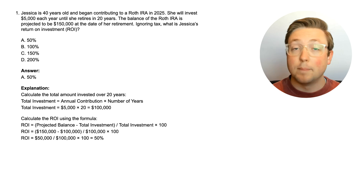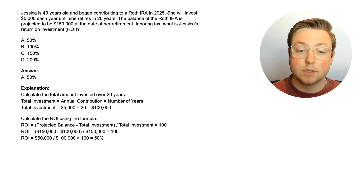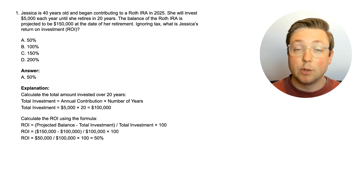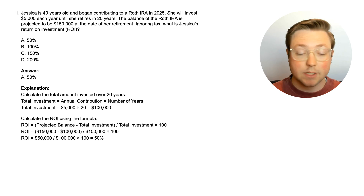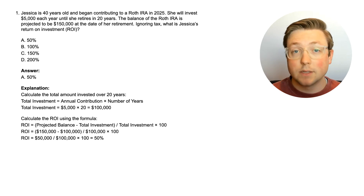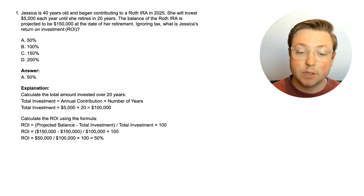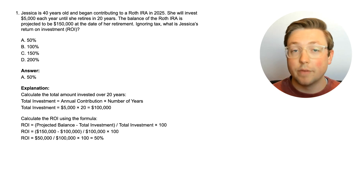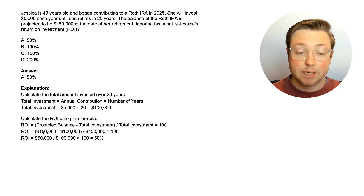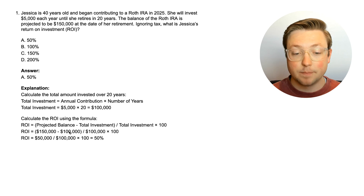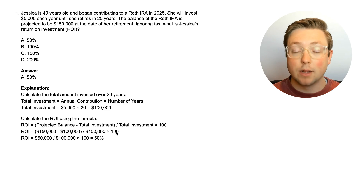First, you have to calculate the total amount that was invested — over the 20 years, that's $5,000 times 20 equals $100,000. Then you take the current balance, or in this case the projected balance, subtract the total investment, divide that number by the total investment again, and multiply all of it by 100, giving you the full 50%. The projected balance less the actual investment is $50,000, divided by the actual investment, multiplied by 100. This is ignoring tax.